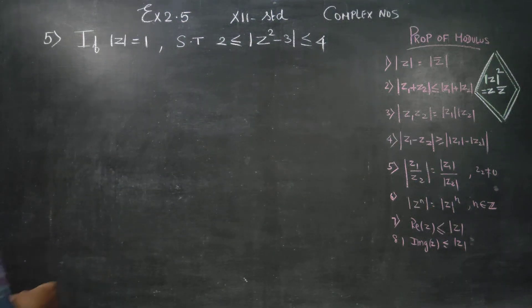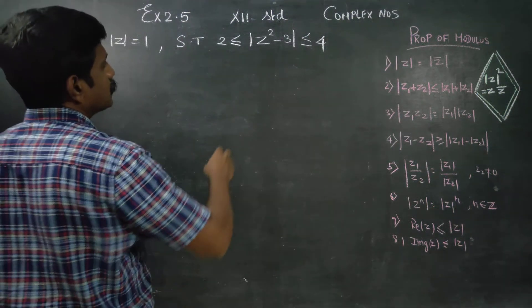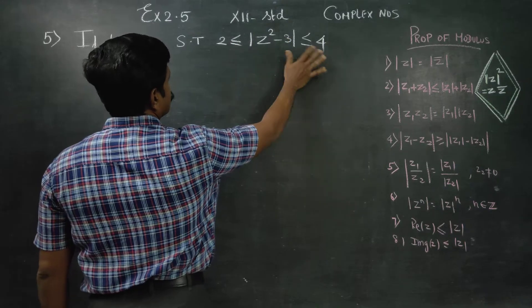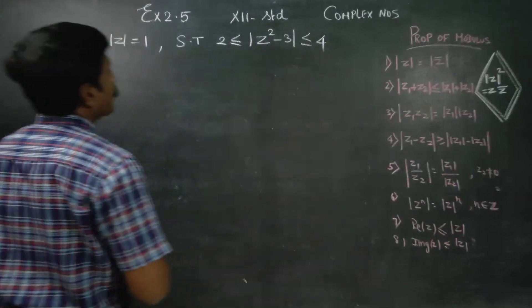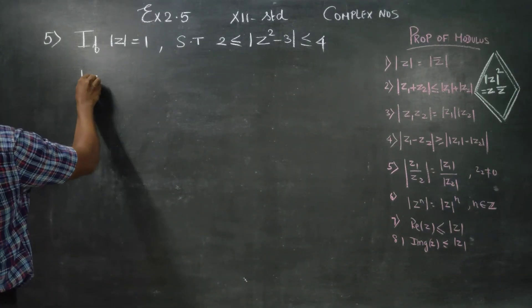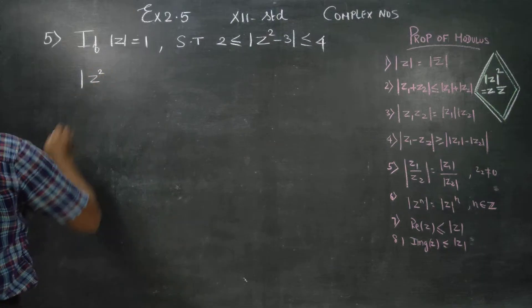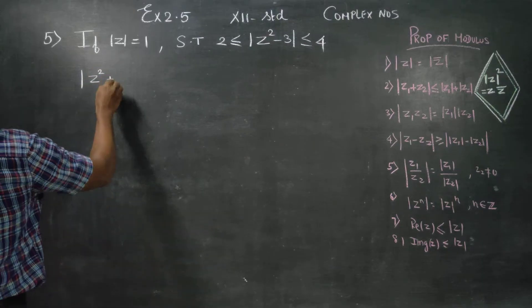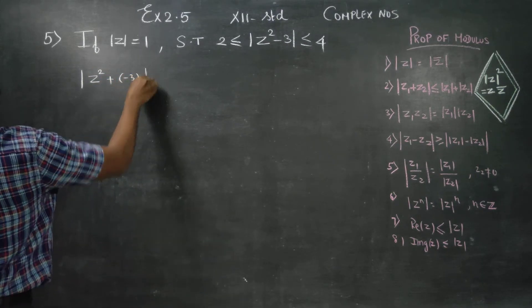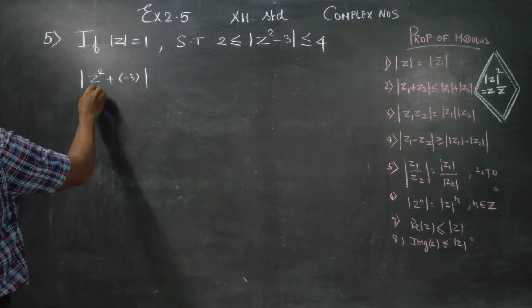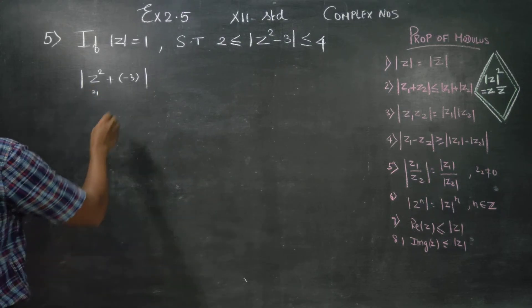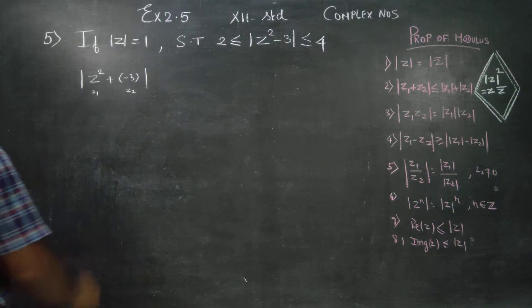Dear students, we have to prove that |z² - 3| is less than or equal to 4. I will start with z² + (-3). This is my z1 and this is my z2.